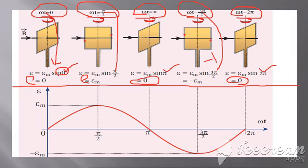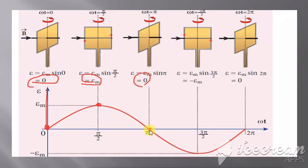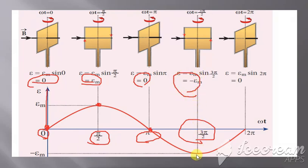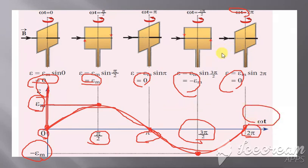When you draw the graph corresponding to these values: e starts at 0, rises to maximum E_m at pi/2, returns to 0 at pi, drops to minus E_m at 3pi/2, and returns to 0 at 2pi. The y-axis is labeled e, with points at E_m and minus E_m, and the x-axis is labeled omega t. Joining all these points gives a sinusoidal graph. This diagram is very, very important.